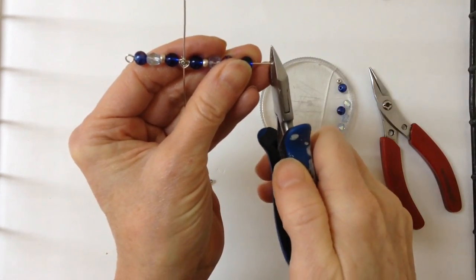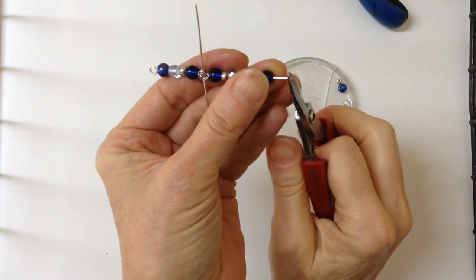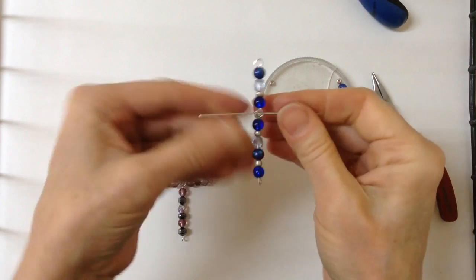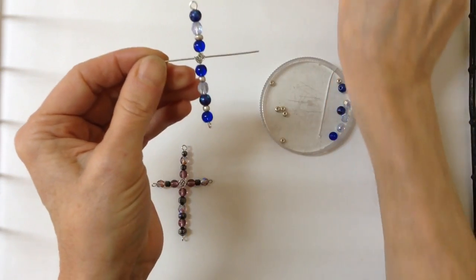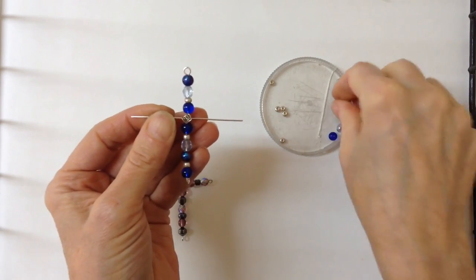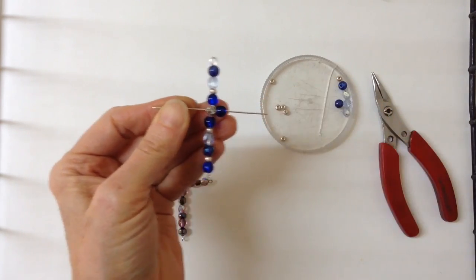Same thing. You can trim that to about a quarter inch, three eighths of an inch, and just turn it with your round pliers. Then all you have to do are these side ones. We can follow the same pattern that we had on the top.